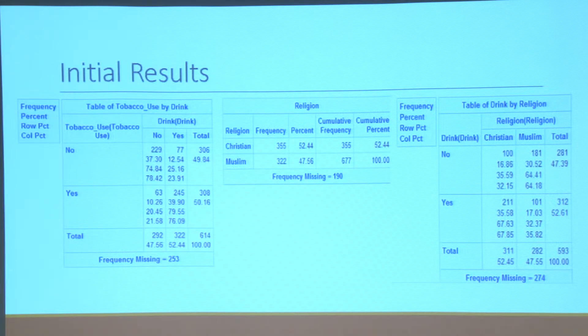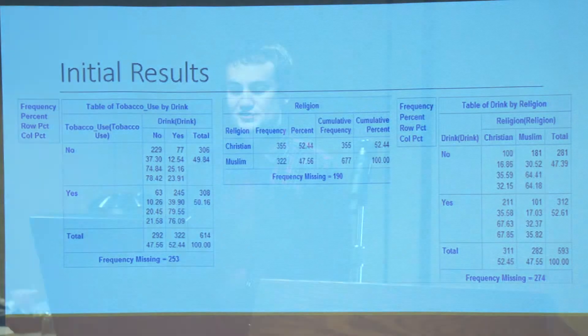The proportion of Muslims versus Christians who developed esophageal cancer is about what you would expect based on the population, but not what you'd expect given that Muslims report lower amounts of drinking. About 30% of Muslims in the cancer group did not drink at all compared to 16% of Christians, so I need to explore whether that's a significant difference.